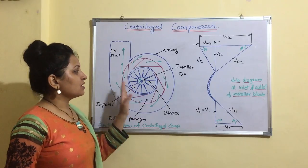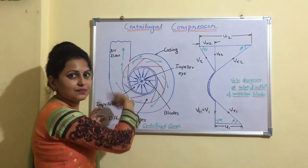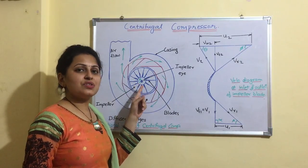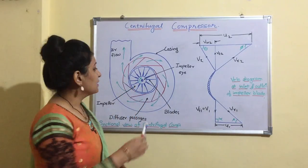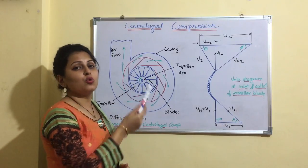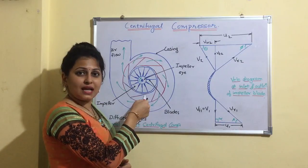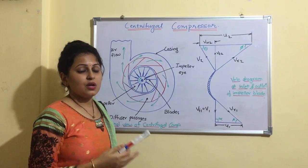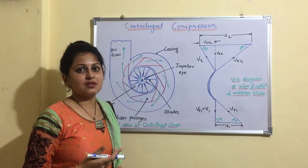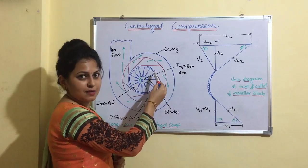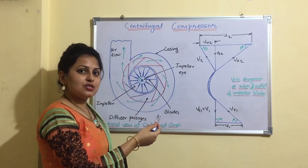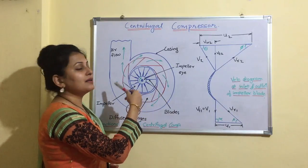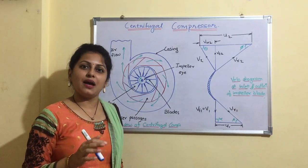Let us move to the construction and working of centrifugal compressor. This diagram is the sectional view showing the basic parts: impeller, diffuser, and casing. The impeller consists of impeller blades which rotate inside the casing; the center of the impeller is the eye, connected to the drive shaft. As the impeller rotates, air enters the impeller eye radially with low velocity and atmospheric pressure. Due to centrifugal action, the high speed of the impeller results in a rise in momentum of air, causing higher static pressure, temperature rise, and rise in kinetic energy. When air leaves the impeller it enters the diffuser, where kinetic energy is converted into pressure energy and static pressure increases further. This air is then collected in the casing and delivered at high pressure, high temperature, and higher velocity.